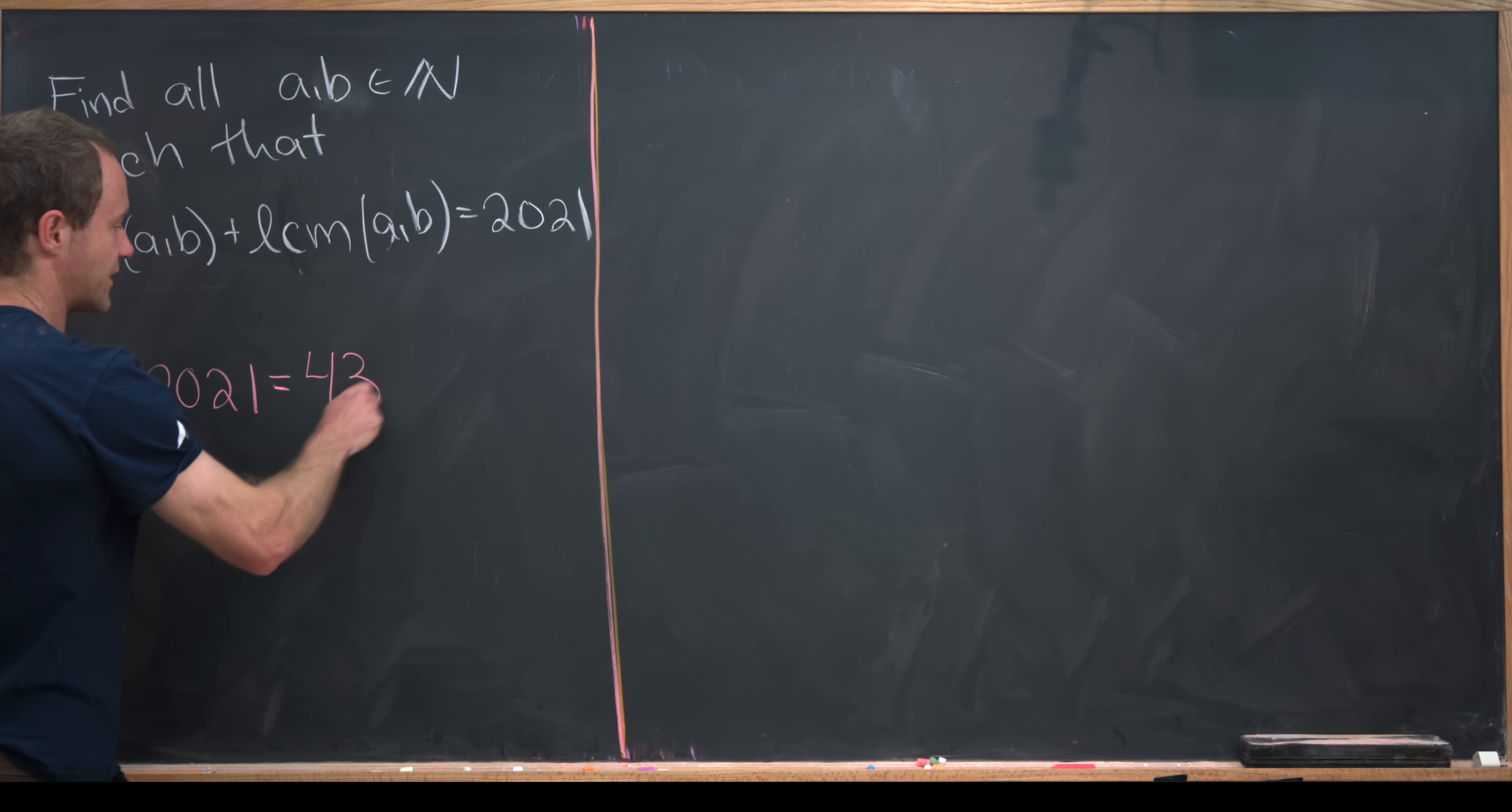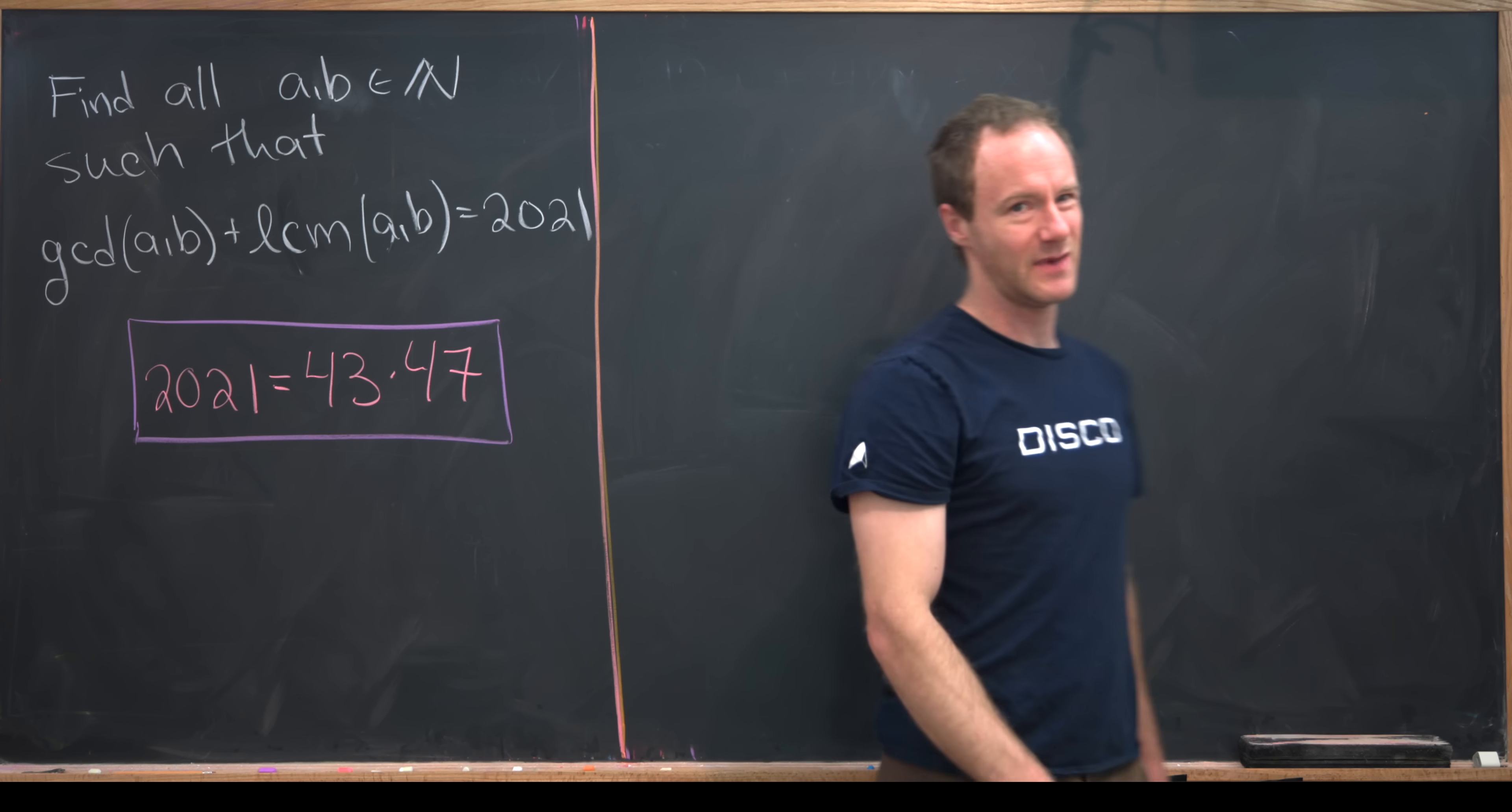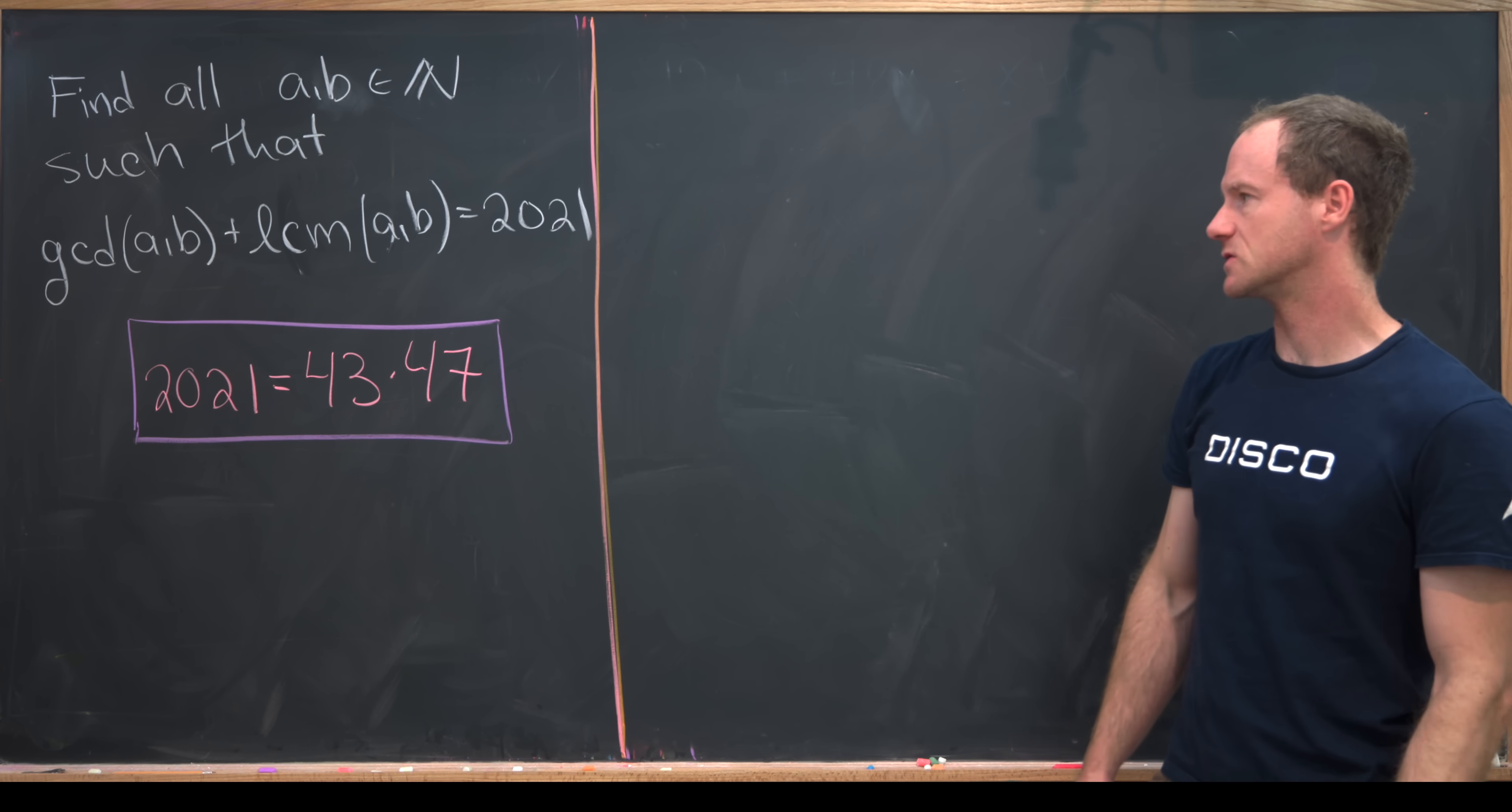This is equal to 43 times 47. Actually, the fact that 2021 factors into only two primes makes a lot of the problems involving 2021 a lot easier than they will be, for instance, next year or what they were last year. Let's get into the solution.